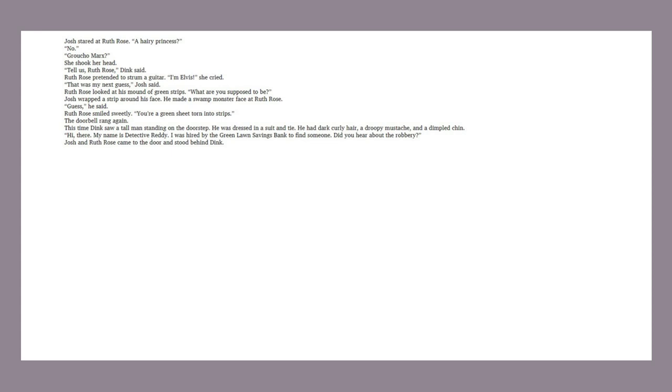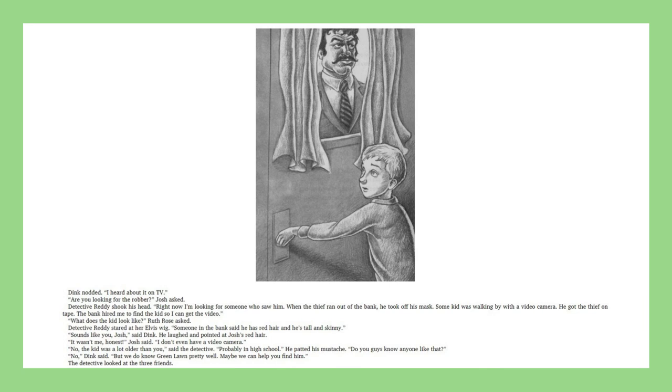The doorbell rang again. This time, Dink saw a tall man standing on the doorstep. He was dressed in a suit and tie. He had dark curly hair, a droopy mustache, and a dimpled chin. Hi there. My name is Detective Reddy. I was hired by the Green Lawn Savings Bank to find someone. Did you hear about the robbery? Josh and Ruth Rose came to the door and stood behind Dink. Dink nodded. I heard about it on TV. Are you looking for the robber? Josh asked. Detective Reddy shook his head. Right now, I'm looking for someone who saw him. When the thief ran out of the bank, he took off his mask. Some kid was walking by with a video camera. He got the thief on tape. The bank hired me to find the kid so I can get the video.